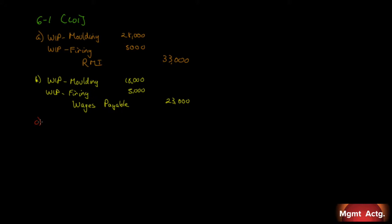Transaction C: Manufacturing overhead was applied — notice it says applied, not incurred. We're still using the predetermined overhead rate for each department. Applied to molding department: $24,000; firing department: $37,000. So work in process molding increases by $24,000, and work in process firing increases by $37,000. That came out of the manufacturing overhead account — $61,000 total.